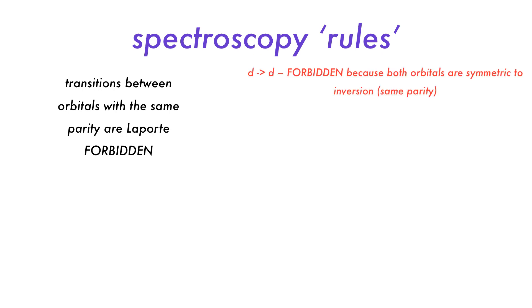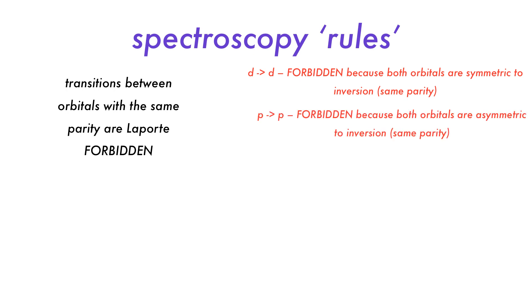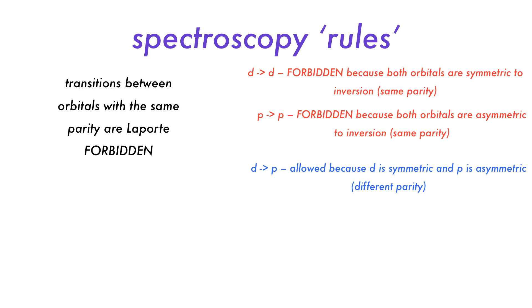Before we go any further, the rules of spectroscopy need to be established. The first rule is that transitions between orbitals with the same parity, or symmetry with respect to inversion, are Laporte-forbidden. This means that an electronic transition from one d-orbital to another d-orbital is technically forbidden, because the d-orbitals are symmetric with respect to inversion. P-to-P transitions are also forbidden, because even if they are anti-symmetric to inversion, they are both anti-symmetric, and therefore such transitions are technically forbidden.